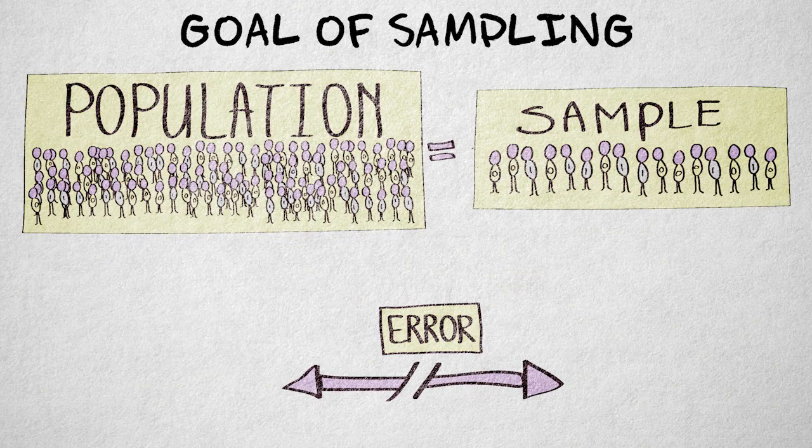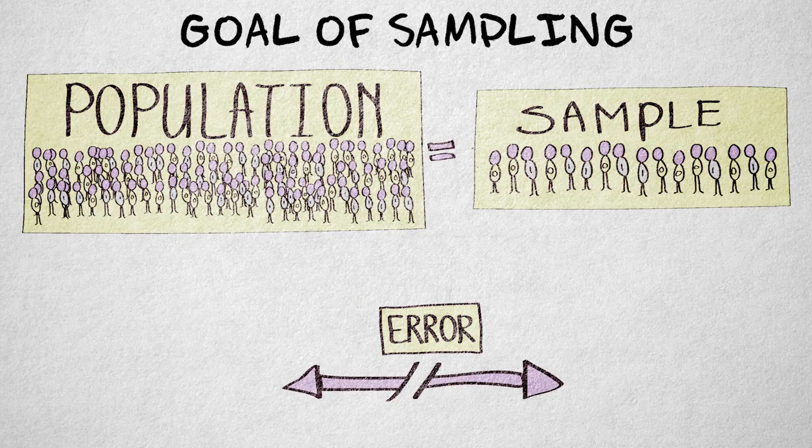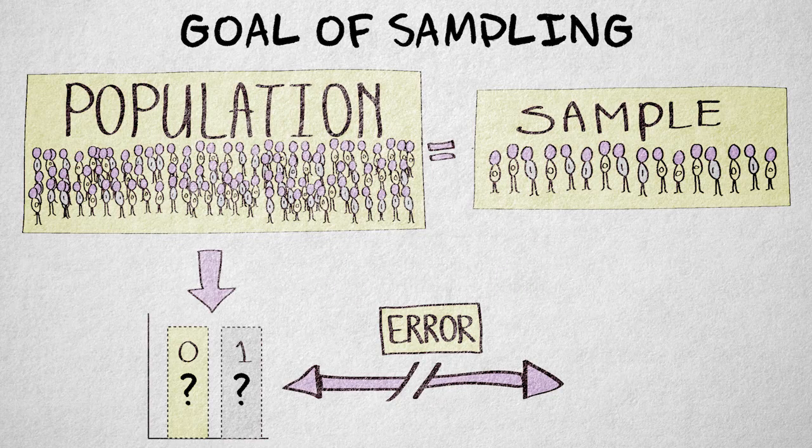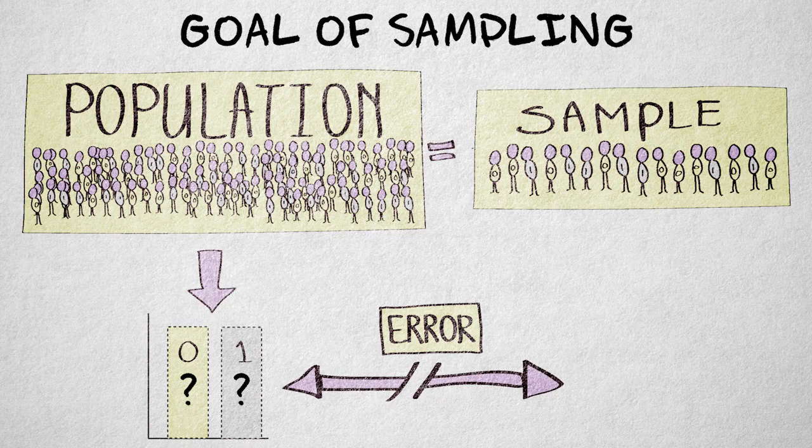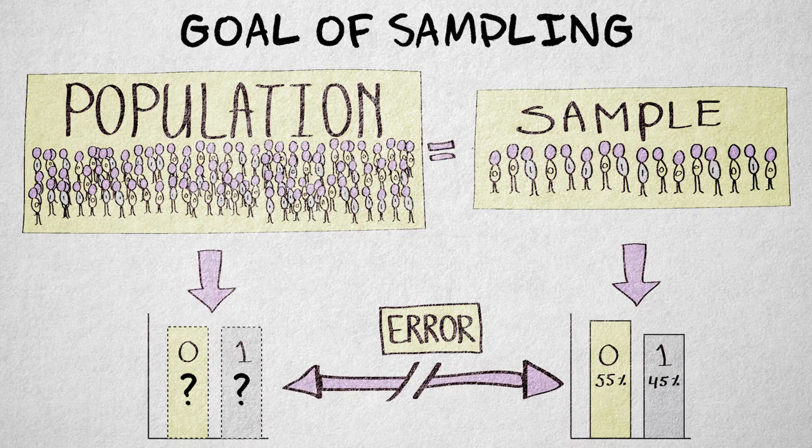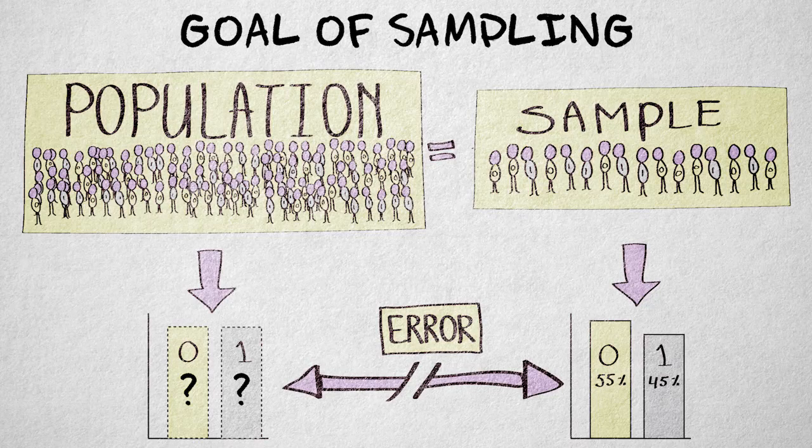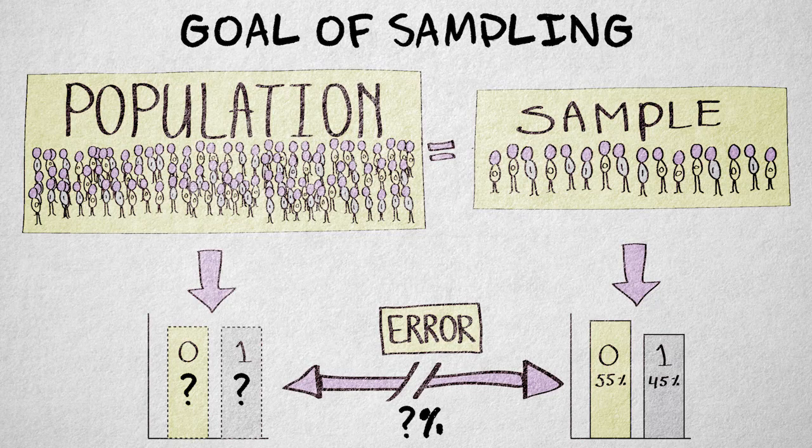It's important to keep in mind that the true value in the population is almost always unknown. If we knew the population value, then we wouldn't need a sample. This also means that for any particular sample, we cannot assess how large the error is exactly.